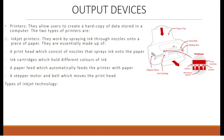The first output device we will be discussing are printers. These allow users to create a hard copy document of data stored in a computer. The two types of printers are inkjet printers and laser printers. Inkjet printers work by spraying ink through nozzles onto a piece of paper. They are made up of a printhead with nozzles that spray ink onto the paper, ink cartridges which hold different colors of ink, a paper feed which automatically feeds the printer with paper, and a stepper motor and belt which moves the printhead.